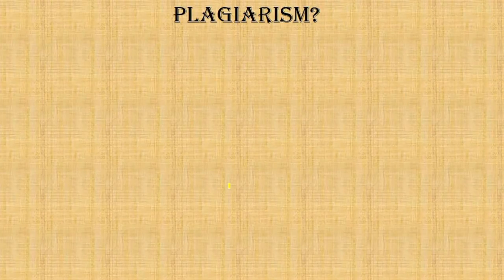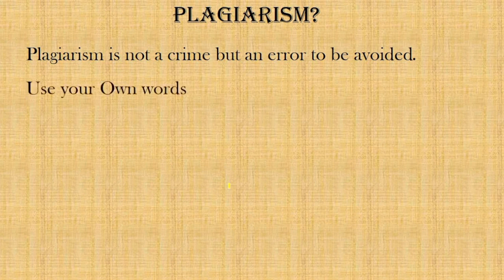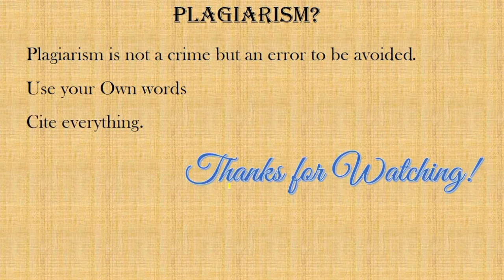To summarize: what is plagiarism? Plagiarism is not a crime — if it were a crime, it should not be allowed even one percent in any research article. It is actually an error to be avoided or reduced. Always use your own words. Researchers who are not proficient in the language they are writing in tend to take the same words of the author and forget to cite it, and then they land up in plagiarism. The most important thing is to cite everything you write in your research. Thanks for watching this video.